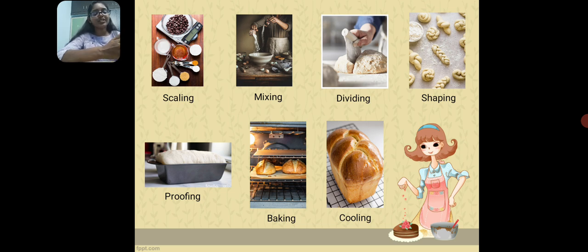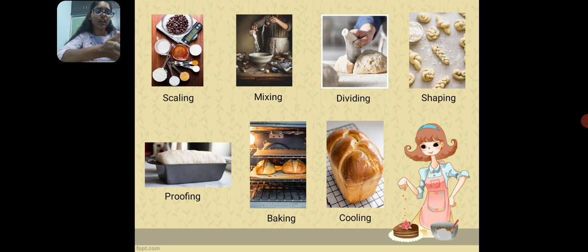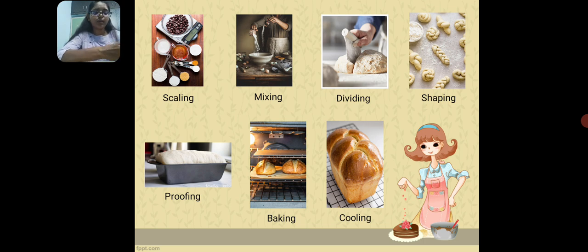First, we have to measure the ingredients required for bread making using a weighing balance and measuring spoons and measuring jars. Then we have to mix the ingredients we have measured and make the dough. We can divide the dough and shape it into desirable forms, then allow the dough for the proving process — that means the dough rises. We then bake the proven dough, cool the bread, store it, and the bread is ready to eat.